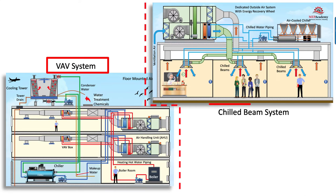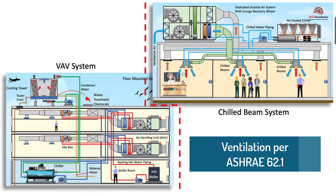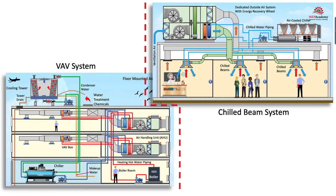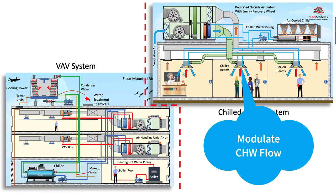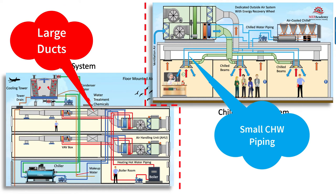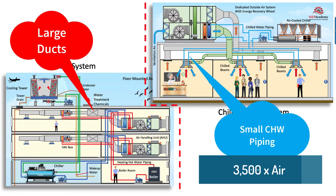Comparing a VAV system to a chilled beam system: all occupied spaces require ventilation air per ASHRAE 62.1, but using reheat in a VAV system to control space temperature is less efficient. The VAV system will reheat air that has already been cooled to maintain space temperature, while the chilled beam system modulates water flow to the coil to respond to low demand without the wasted energy of reheating. Chilled beams use a constant volume of air, while the VAV system varies the quantity of air to the space. Instead of delivering cold air through large ducts, the chilled beam system uses the more energy-efficient carrying capacity of piping — chilled water piping carries over 3,500 times the volumetric heat capacity of air ducts.